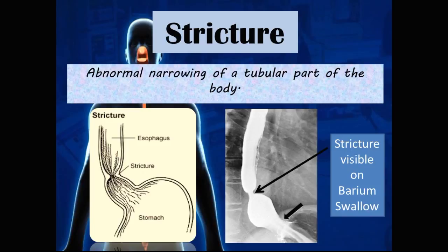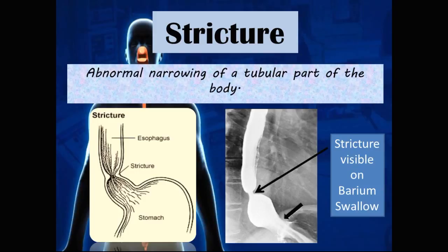A stricture is an abnormal narrowing of a tubular part of the body. For example, an esophageal stricture is an abnormal narrowing of the esophagus. On a barium swallow, this narrowing is very prominent and can be used to diagnose a patient with an esophageal stricture.